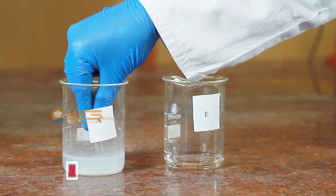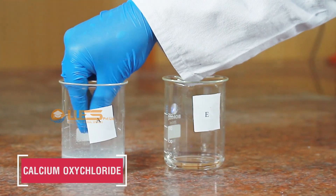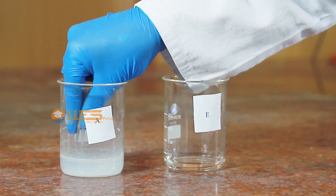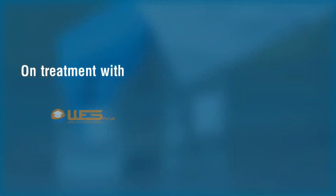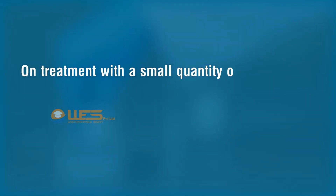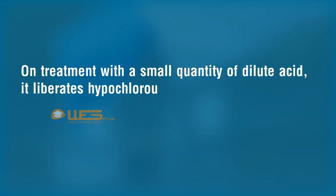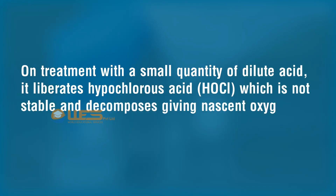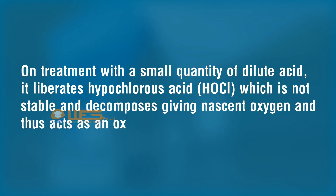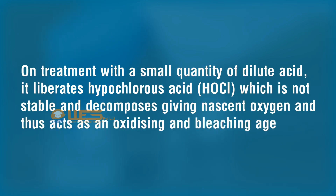Bleaching powder is calcium oxochloride, CaOCl2. On treatment with a small quantity of dilute acid, it liberates hypochlorous acid (HOCl), which is not stable and decomposes giving nascent oxygen, and thus acts as an oxidizing and bleaching agent.